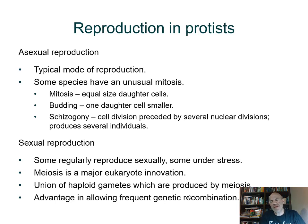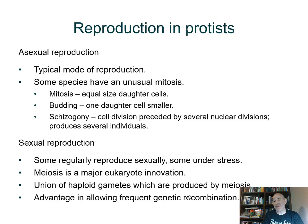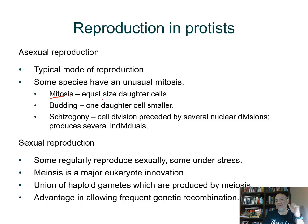For reproduction in protists, many show asexual reproduction through cell division. The euglena would just divide the nucleus and then divide the cell. Mitosis technically is division of the nucleus, so that occurs in all of these. When we talk about a kind of cell division, we need to talk about what kind of cytokinesis will occur — where you get two equal daughter cells.